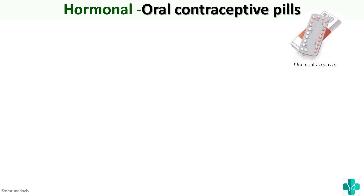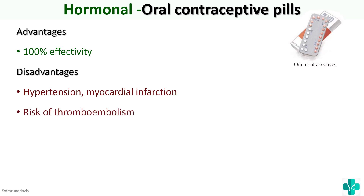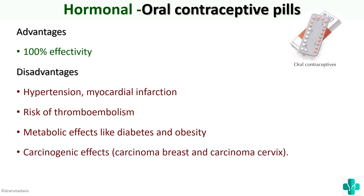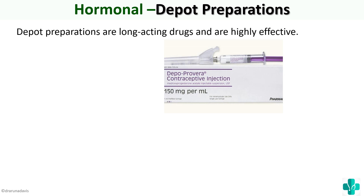For oral contraceptive pills in general, the advantages are that they are usually nearly 100% effective compared to mechanical methods of contraception. The disadvantages include: hypertension and risk of myocardial infarction, increased risk of thromboembolism, metabolic effects like diabetes and obesity, and carcinogenic effects such as carcinoma of the breast and carcinoma of the cervix.